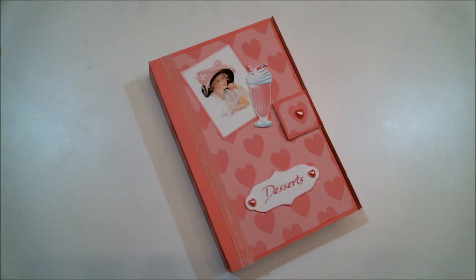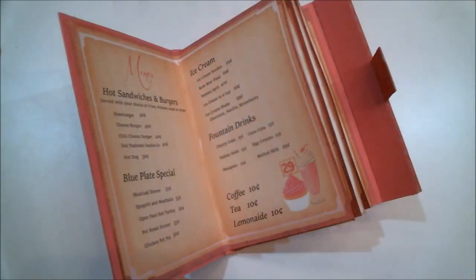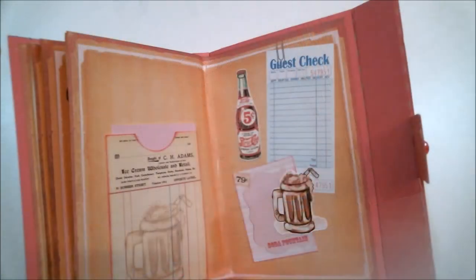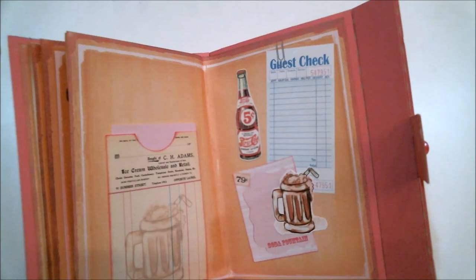I decorated the front cover with some cutouts from the soda fountain shop bundle. And I also created a little label that said desserts and added some pink pearly hearts. And then this is the inside, the front cover of the inside and also the back cover on the inside, where you could see that I also used some other cutouts from this bundle. And then on that last page, I used one of the library cards to create a pocket to hold recipe cards.